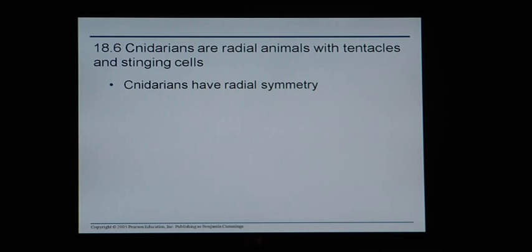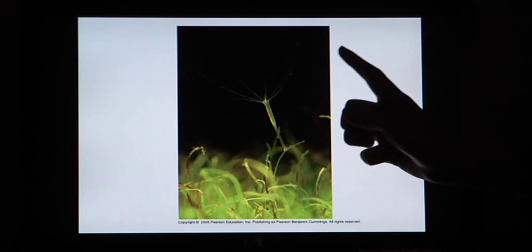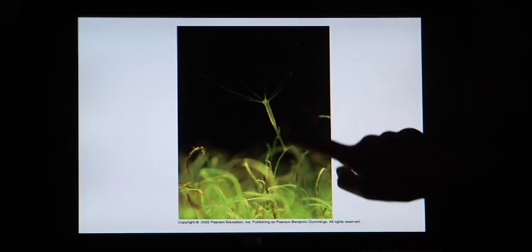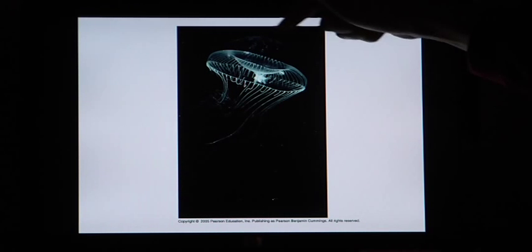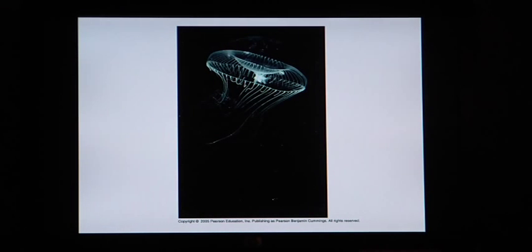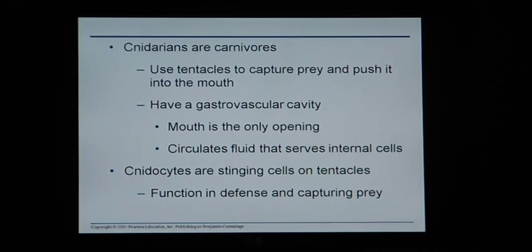Cnidarians are radial animals with tentacles and stinging cells. Cnidarians have radial symmetry — they're kind of circular in shape, with a middle body part and tentacles coming off of it, and those tentacles can sting. Here's another one you're very familiar with: this is a jellyfish, which also has radial symmetry — it's circular in shape with body parts coming off that center axis, which are stinging tentacles. Cnidarians are carnivores; they use their tentacles to capture their prey and push it into their mouths.